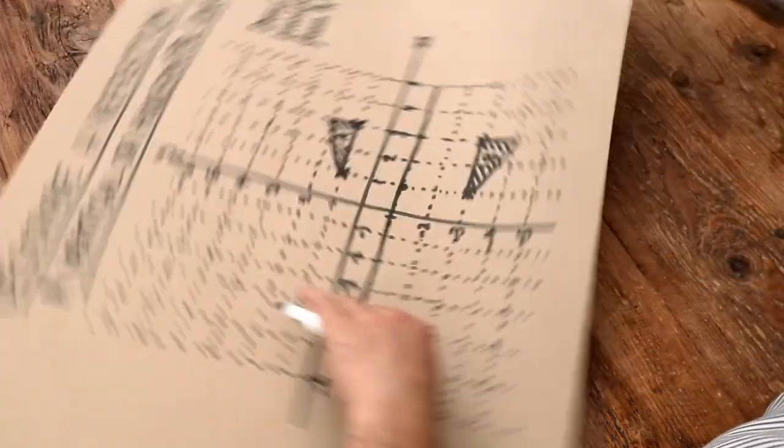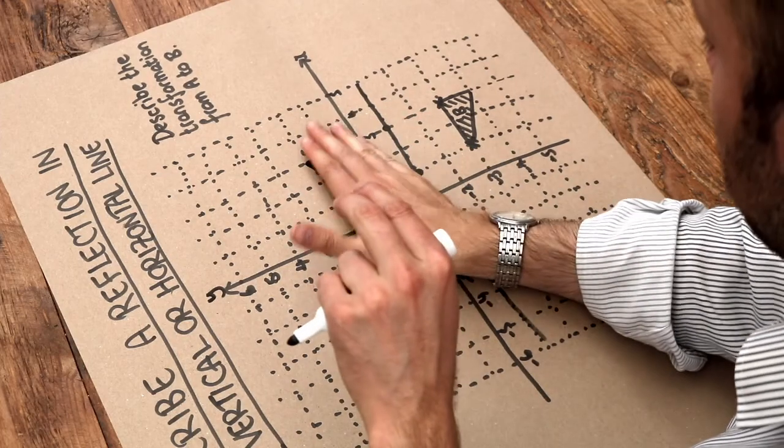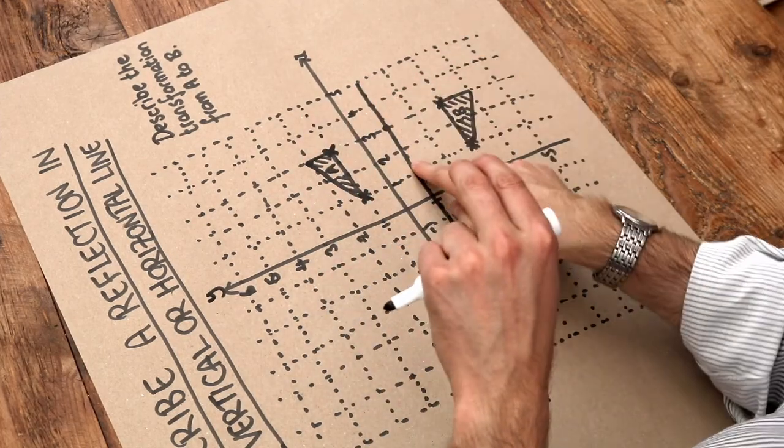It just looks visually right. You can see that that shape is reflected over like that in that line.